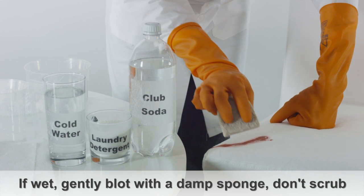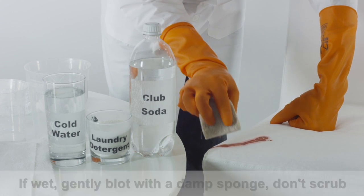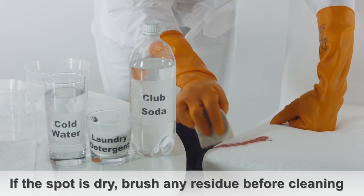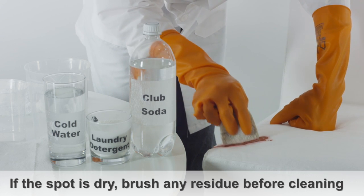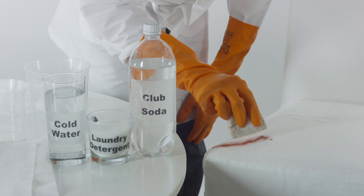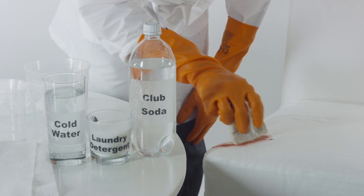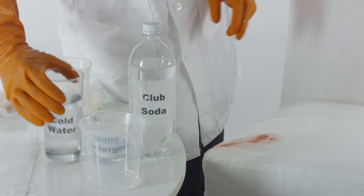If the blood is wet, take a damp sponge or cloth and gently blot the blood stain. If the blood stain is dry, use a toothbrush to scrape off any residue before you begin blotting. Try to avoid scrubbing, as that can push the blood further into the upholstery.